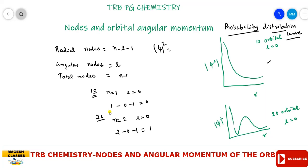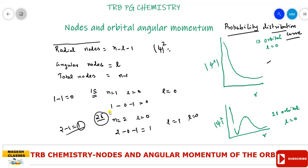For the angular nodes, l is equal to 0, so there are no angular nodes. For the total nodes, n minus 1: for the 1s orbital it is 1 minus 1 equals 0, and for the 2s orbital, n is 2 minus 1 equals 1 total node. So the 2s orbital has no angular nodes and one radial node. This is the important formula to keep in mind to calculate the number of nodes.